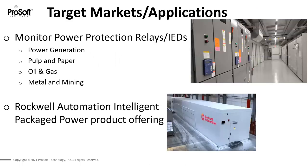When we look at where these applications occur, if you find yourself in a room like the picture on the top right-hand side, that's really where you can incorporate some of these devices into your control architecture. These power protection relays are used in anything from power generation applications, pulp and paper, oil and gas, metal and mining, and heavy materials. Rockwell Automation does have a packaged power product offering, and the products we'll be talking about today are a critical component of that intelligent packaged power product offering.